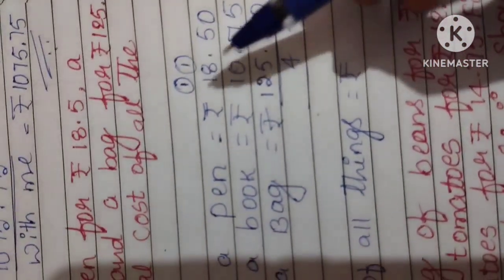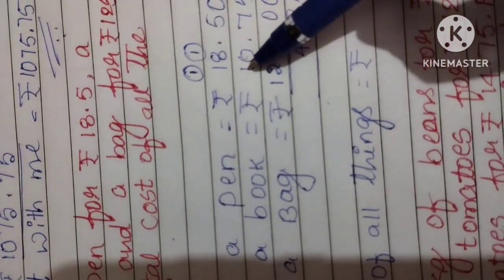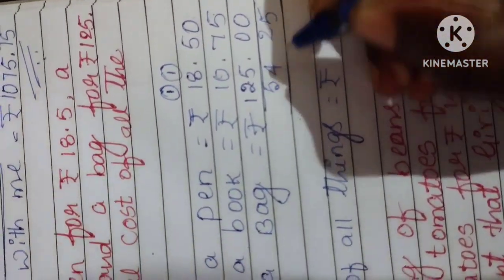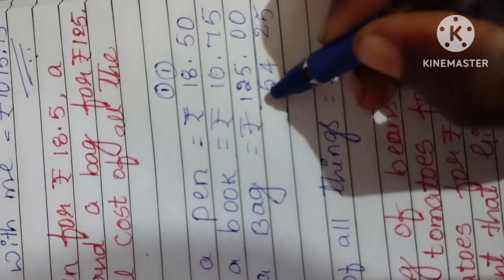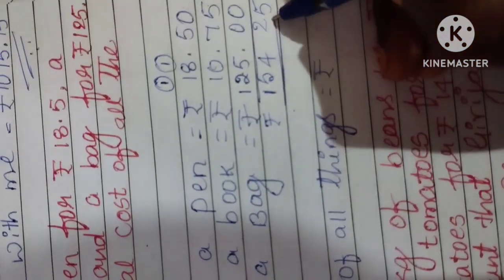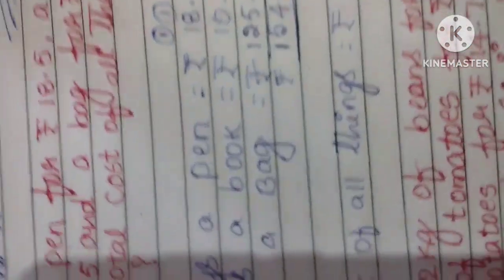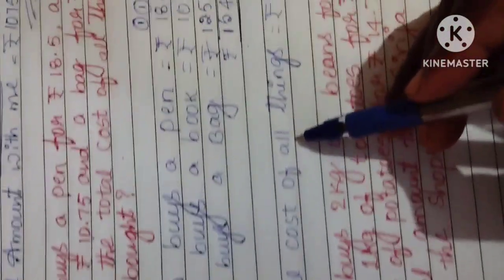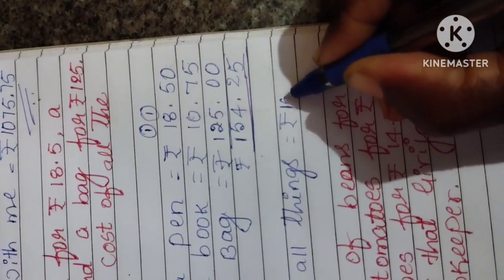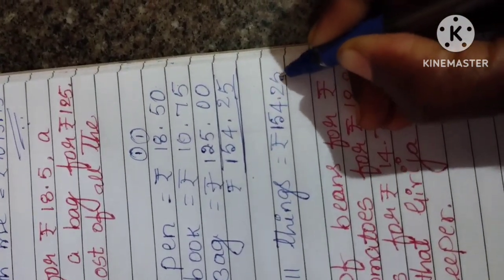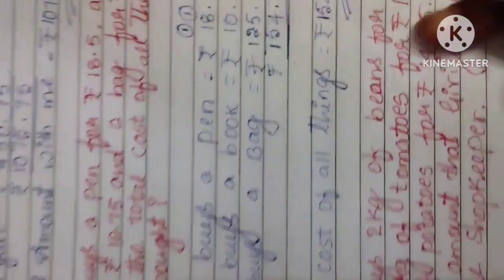Next, 1 plus 8 is 9, 9 plus 5 is 14. 1 goes to carry. Next, 1 plus 1 is 2, 2 plus 1 is 3, 3 plus 2 is 5. Next we have 1, only 1. So, Rs. 154.25. You can write here, the total cost of all things, that is equal to Rs. 154.25. This is the answer.